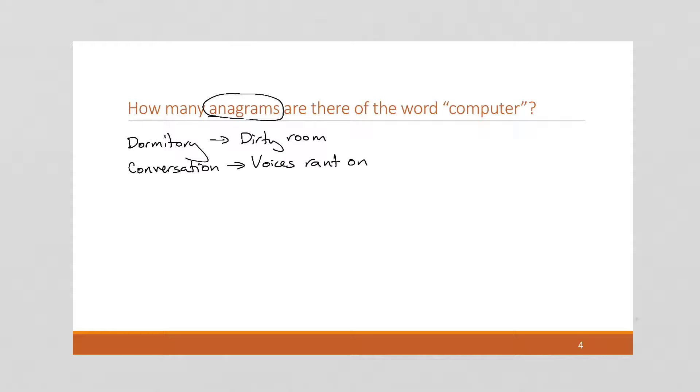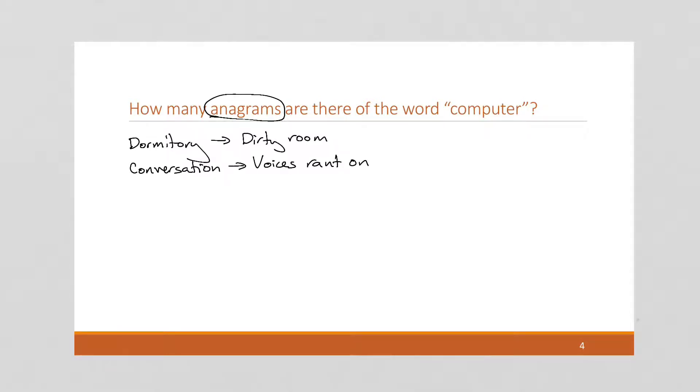So these two are funny because we could reorder them in a certain way to get a joke, a quip about it. But for computer, we just want to look at any way we can organize these anagrams. So for computer, there are eight letters and the number of anagrams are just going to be how many ways can we organize those eight letters. So we're going to have eight factorial, and if you pull out your calculator or work it out, you're going to get that this is 40,320 possible permutations.